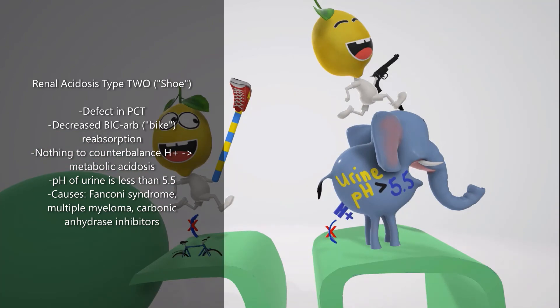In contrast to type 1, in RTA type 2 the urine pH is less than 5.5, because the urine can still be acidified by alpha intercalated cells in the collecting duct — just not enough to overcome the increased excretion of bicarb. Causes of RTA type 2 include Fanconi syndrome, multiple myeloma, and carbonic anhydrase inhibitors.